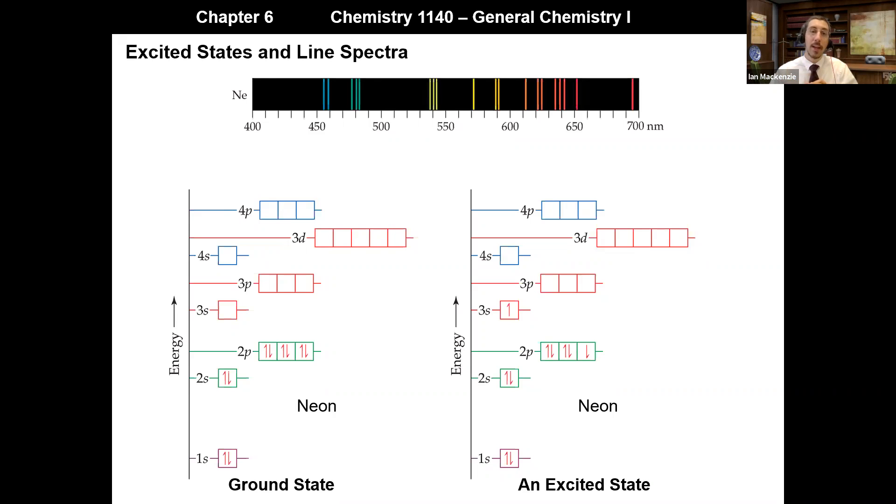We look at the electron configurations and we can calculate if we know the energies of the different orbitals. We can make calculations based on the energy differences for where those lines should appear and can match that well with experimental data.